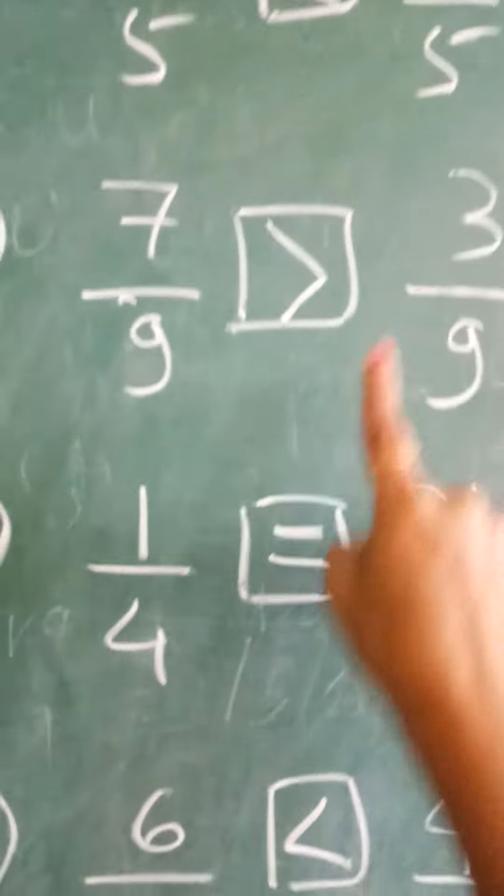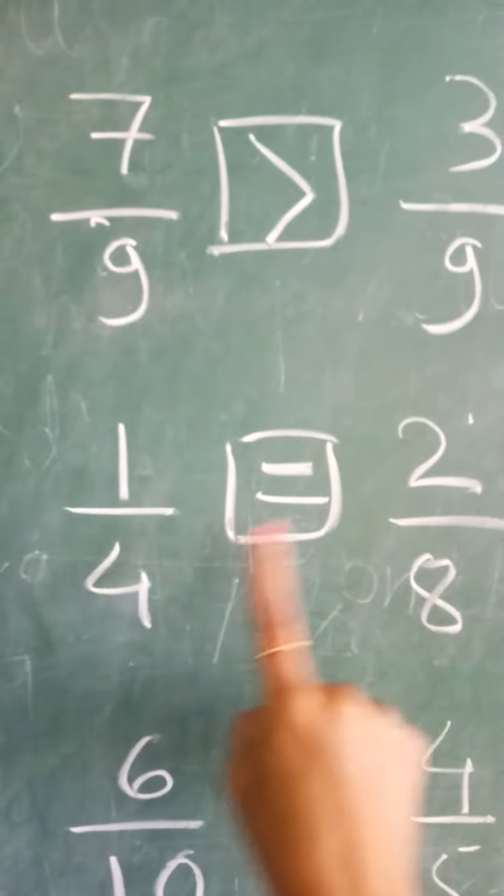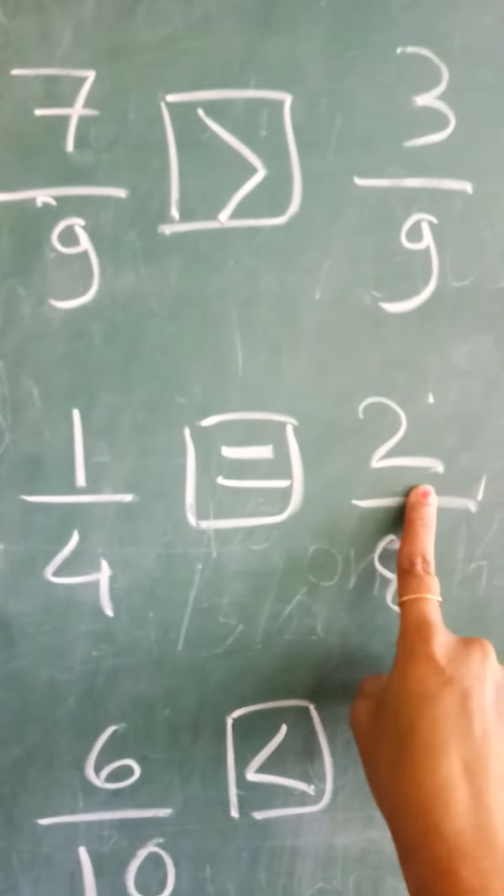Then 1 upon 4, 2 upon 8. 8 ones are 8, 4 twos are 8. Both sides are 8, which means equal to sign.